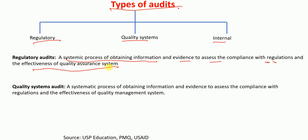Another important type of audit is the quality systems audit. It is also a systematic process of obtaining information and evidence to assess compliance with regulations, but here the focus is on the effectiveness of the quality management system. The purpose is to assess compliance with quality management systems in addition to regulatory compliance.